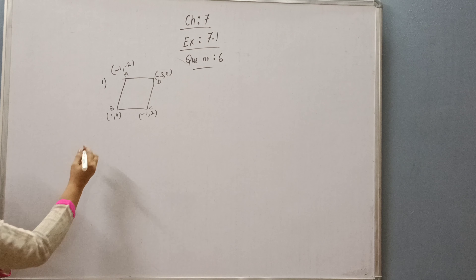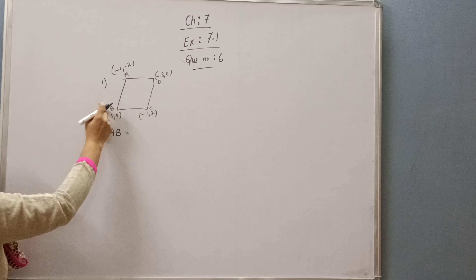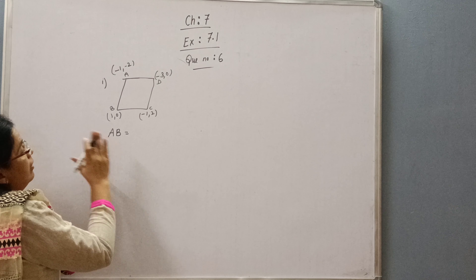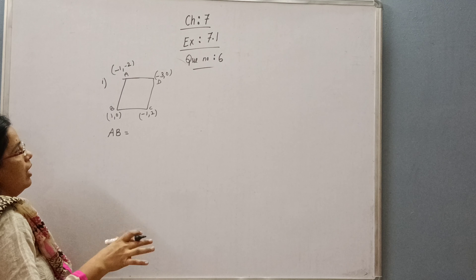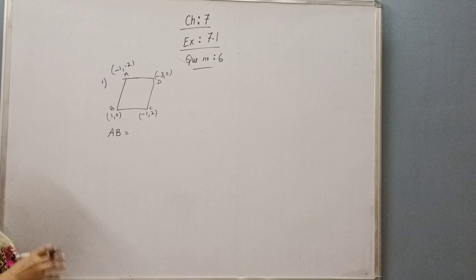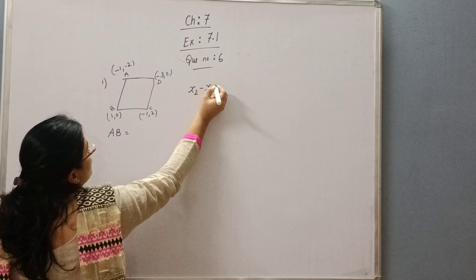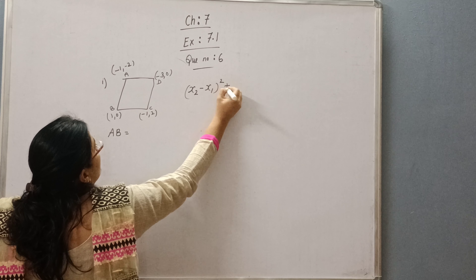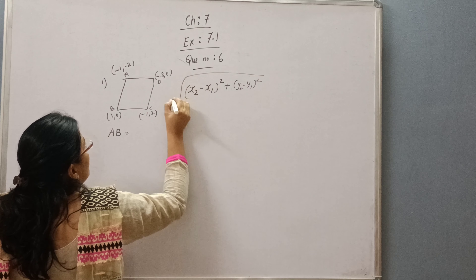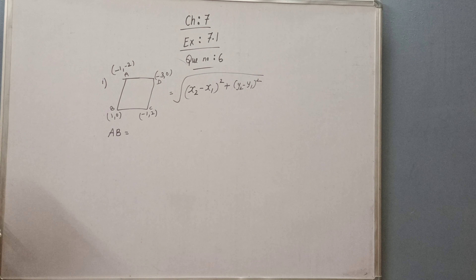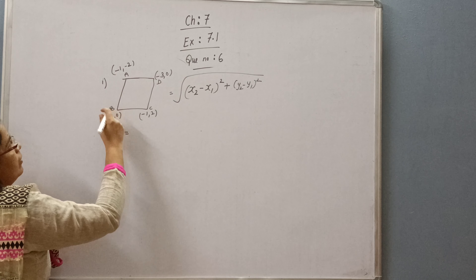So we will first find the sides of the quadrilateral. We will find AB, and this will be found with the help of the distance formula. The distance formula is: square root of (x2 minus x1) whole square plus (y2 minus y1) whole square. So we are going to apply the distance formula.